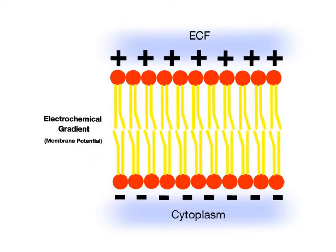Because of the difference in distribution of the charged ions, an electrochemical gradient is also generated across the membrane. The outer face of the membrane is usually more positively charged, while the inner face carries a negative charge. This difference in charges is called the membrane potential.